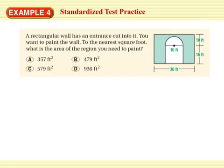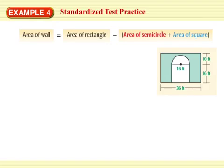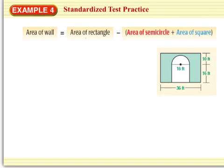A rectangular wall has an entrance cut into it. You want to paint the wall. To the nearest square foot, what is the area of the region you need to paint? Actually I'm going to move this little picture to the next slide so that we can work on it. So this really does make sense. The area of the wall is going to be the area of the rectangle minus the semicircle and the square. So let's do the area of the rectangle because that's an easy one. The area of the rectangle is base times height. 36 times 16 plus 10 is 26. 36 times 26. Area of square, another easy one. It's 16 times 16.